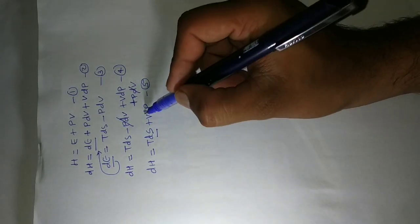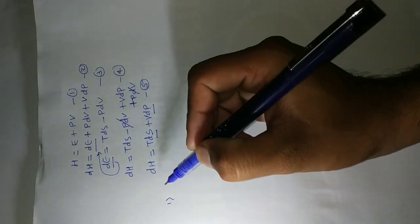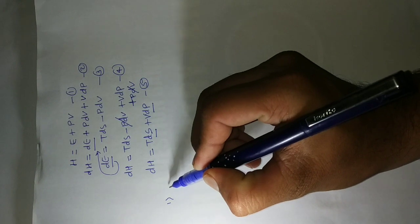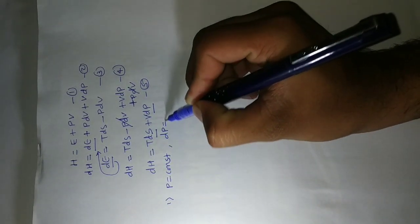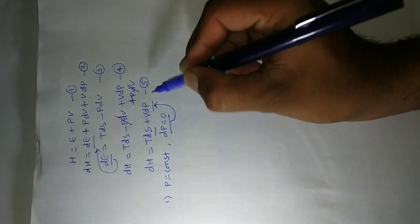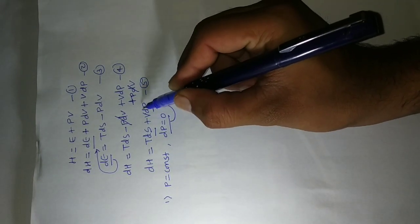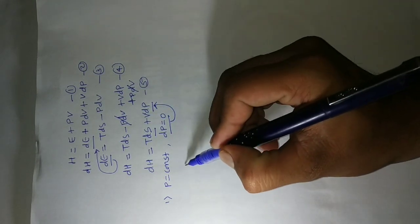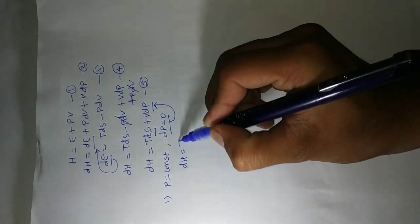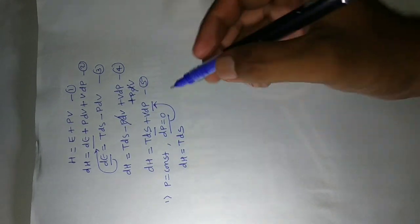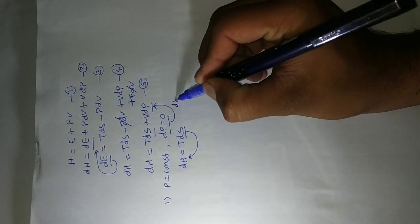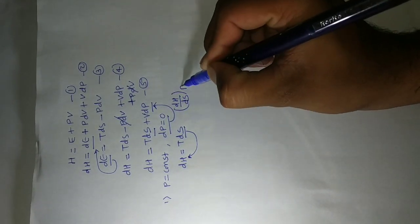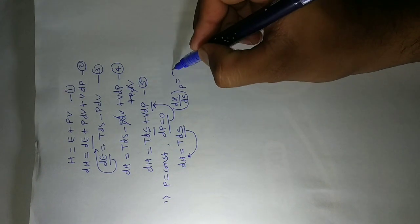In the first part, we make pressure constant. If pressure is constant, then dP equals zero, so that term vanishes. Equation five becomes dH equal to TdS. Transferring to the left-hand side, we get dH/dS at constant pressure is equal to T. This is equation number six.